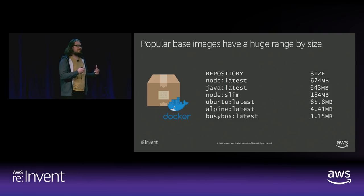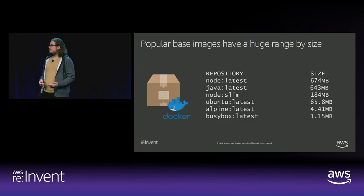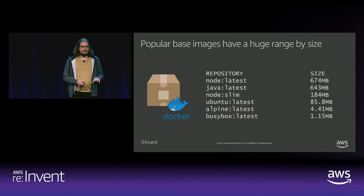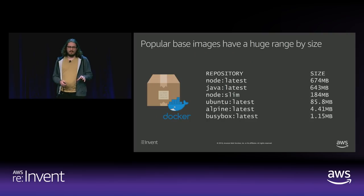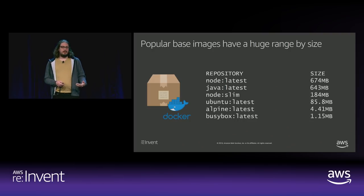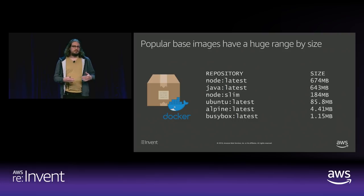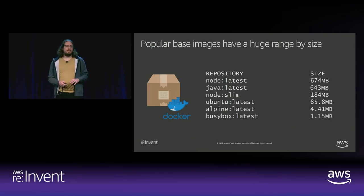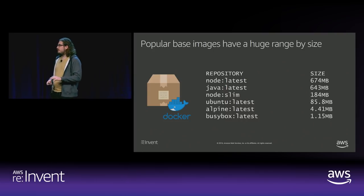Here's a list of popular base images in use today. The baseline Node.js image is almost 675 megabytes in size. There's also a Node.slim image at 184 megabytes. All the way at the bottom, the Alpine image I mentioned is only 4 megabytes, and there's even a BusyBox image just over 1 megabyte. If you're capable of doing so, try to use the most minimalist image available, because the smaller your runtime, the less memory, CPU, and overhead there's going to be running your application on your Kubernetes cluster.